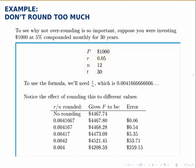Now suppose we use the future value formula: F equals P times 1 plus R over N to the NT, and we calculate how much the account will hold at the end of 30 years. R over N is 0.0041 and then 6 repeating. If we don't round, what we find is that at the end of the 30 years, this account holds $4,467.74.